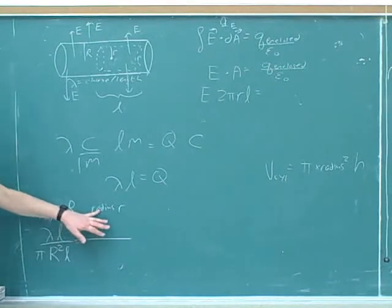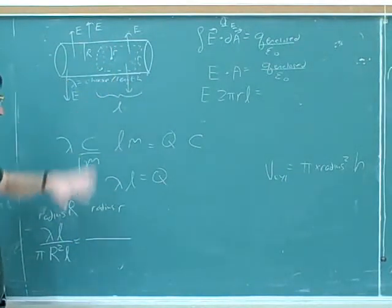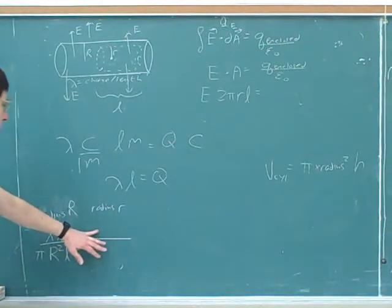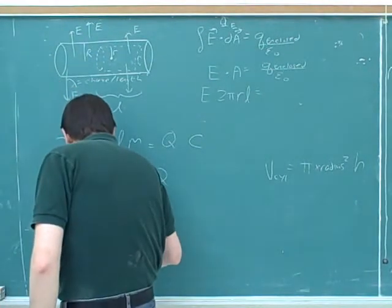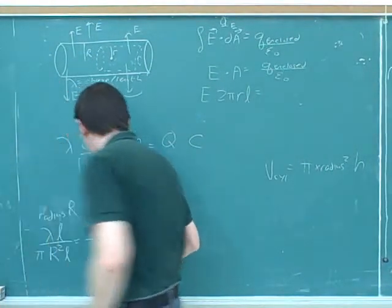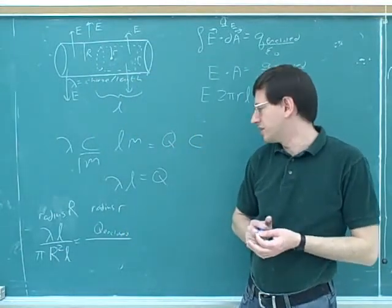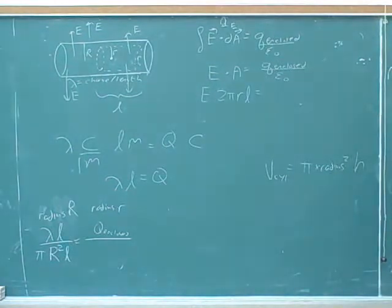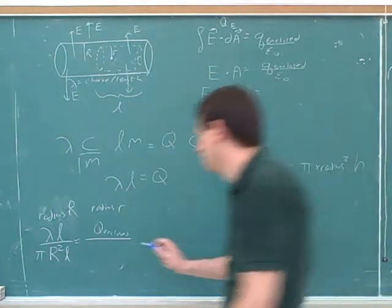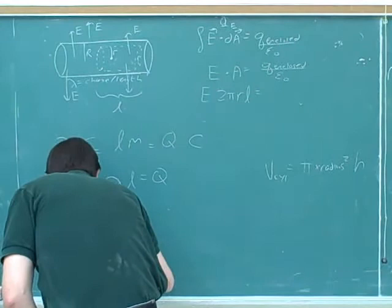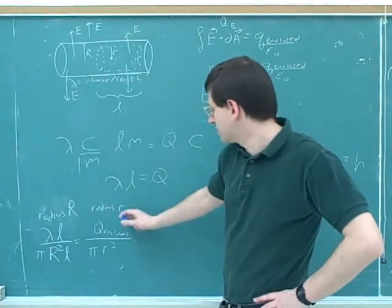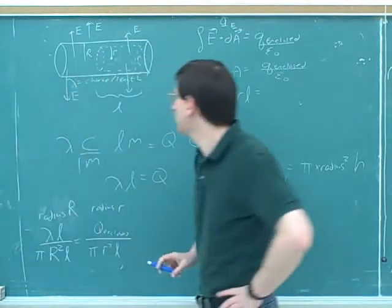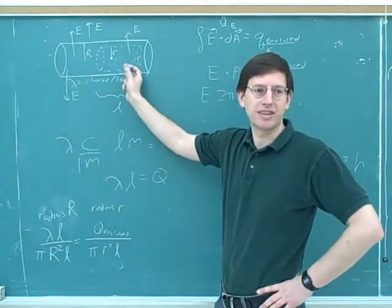And now in our proportion we want to compare that to our actual Gaussian cylinder which has a radius of just little r. Well, what should I plug in up here? This is the unknown, the total amount of charge that's enclosed by the Gaussian cylinder that we don't know. And what can we plug in down here? That's π little r squared times L. Now we're dealing with this smaller radius, but we're still going to deal with a cylinder that has the same length as before.